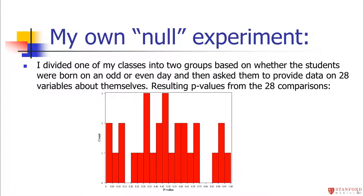I ask students to provide data on lots of other variables about themselves — in one class, 28 variables. By doing 28, that's a lot more than 20, so I'm essentially guaranteeing myself a false positive. I then take the results from all those variables, compare people born on an odd day versus an even day with the correct statistical test, and record the p-value from all 28 comparisons, then put them in a histogram to see what the distribution of p-values looks like.